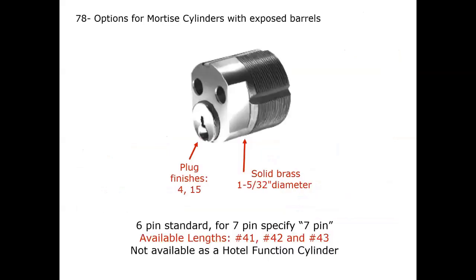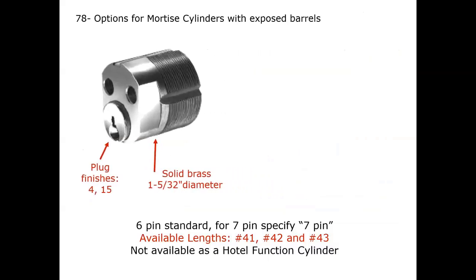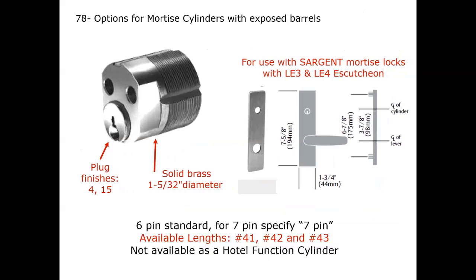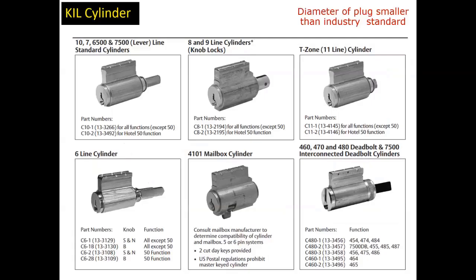Another unique cylinder we offer is our 78-dash series. It's a cylinder where, when used with certain trims, only the barrel or plug is shown through the outside trim, so you have a more sleek look on the outside of the door. Looking at key and lever lock cylinders, here's our lineup showing the 10 line, 8 line, T-zone, 6 line, our 4100 series mailbox cylinder, and our deadbolt cylinders.